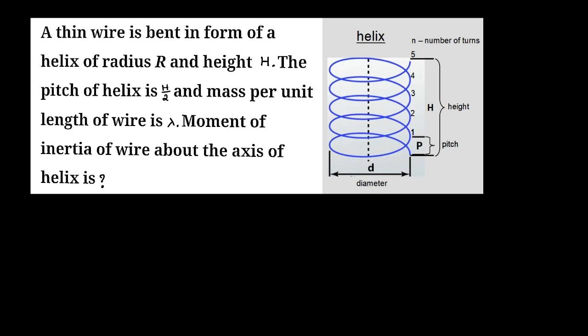A thin wire is bent in the form of a helix of radius R and height H. The pitch of the helix is h/2 and mass per unit length of the wire is lambda. Moment of inertia of wire about the axis of the helix is our question.